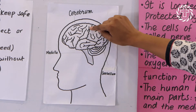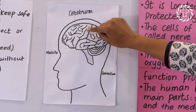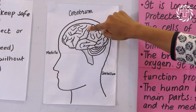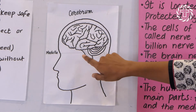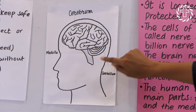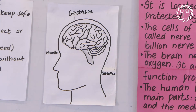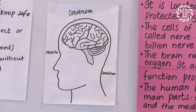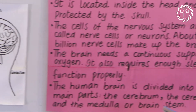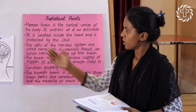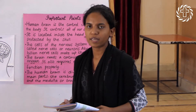This is a picture of the brain. This part is called the cerebellum. Different parts of the brain do different jobs.